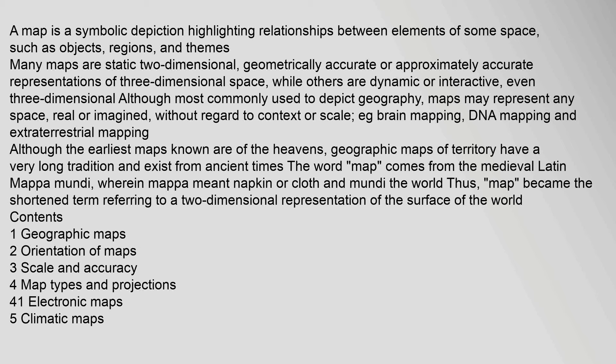A map is a symbolic depiction highlighting relationships between elements of some space, such as objects, regions, and themes. Many maps are static two-dimensional, geometrically accurate or approximately accurate representations of three-dimensional space, while others are dynamic or interactive, even three-dimensional.